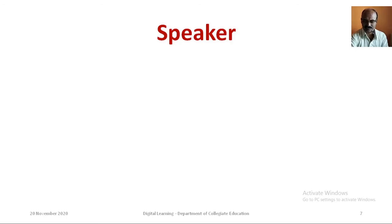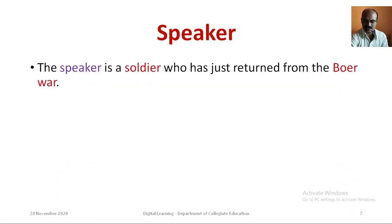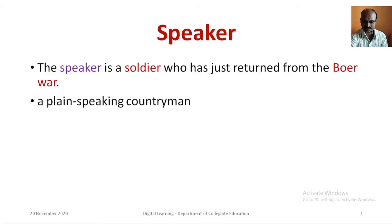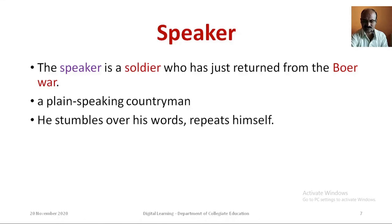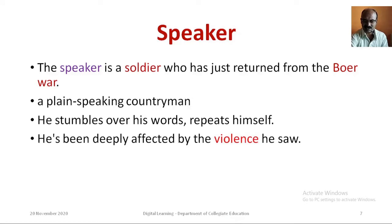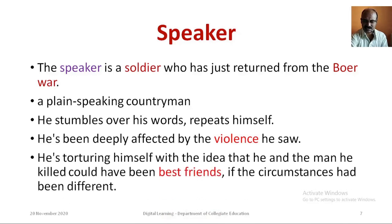Who is the speaker in this poem? The speaker is a soldier who has just returned from the Boer War. He is a plain-speaking countryman. He stumbles over his words and repeats himself. He has been deeply affected by the violence he saw. He is torturing himself with the idea that he and the man he killed would have been best friends if the circumstances had been different.